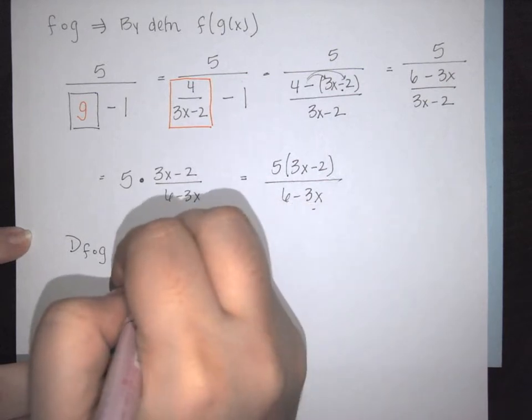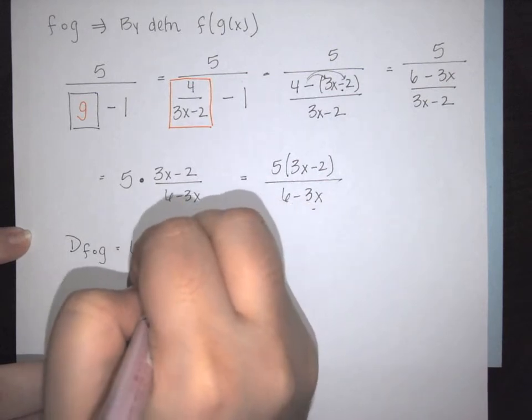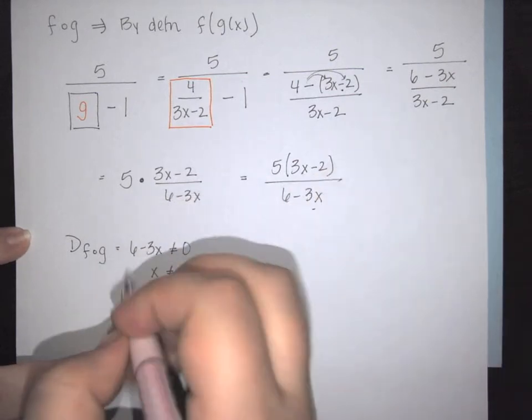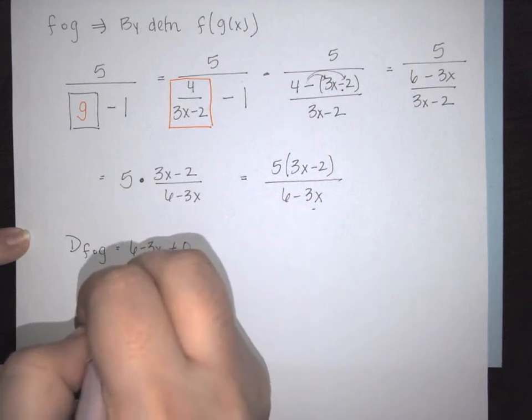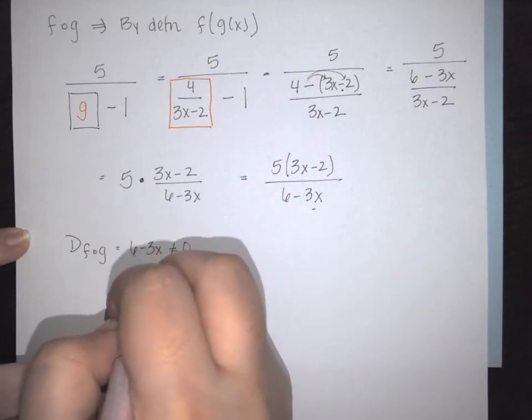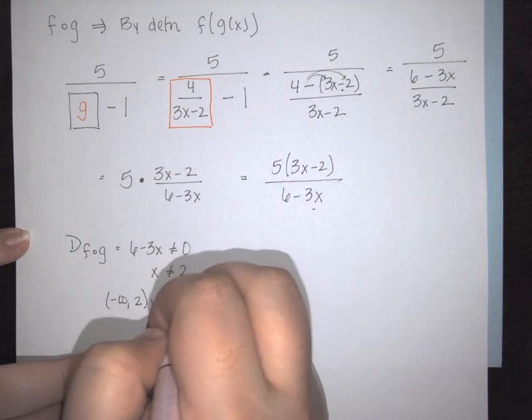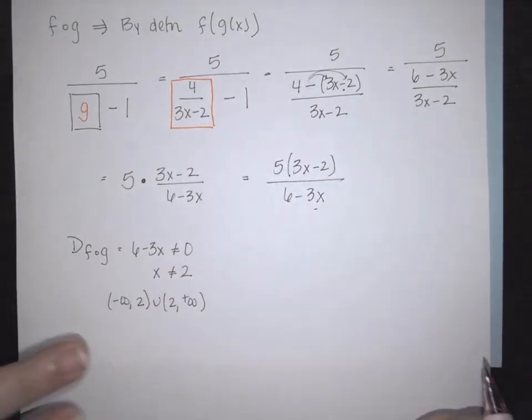So in this case we have that x cannot be 2. So my domain is going to go from negative infinity to 2 union 2 to positive infinity. Now that's not where it ends.